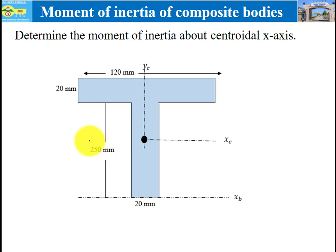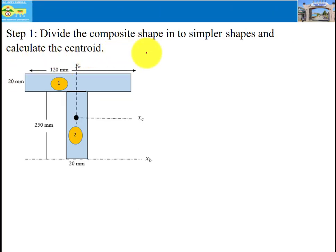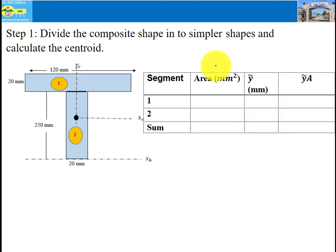We need to find the moment of inertia about the centroidal x-axis. Step one: divide the composite shape into simpler known shapes and calculate the centroid. For the T-section, we divide it into two shapes — shape one and shape two. We'll use the centroid design strategy to find the centroid.